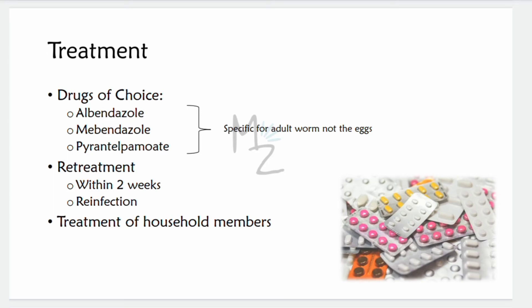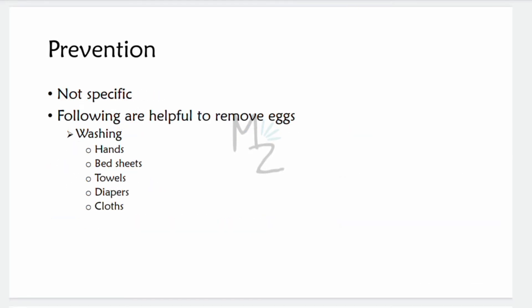Treatment — drugs of choice: albendazole, mebendazole, and pyrantel pamoate. As mentioned in the nematode introduction video, albendazole is the drug of choice for intestinal nematodes. These drugs kill the worms in the colon but not the eggs, so re-treatment in two weeks is suggested. Re-infection is very common, and household members should also be treated. Prevention: no specific means exist, but washing hands when preparing food and washing bedsheets, towels, diapers, and clothing to remove eggs are helpful.